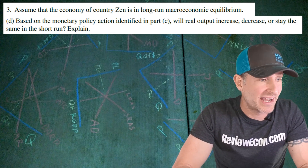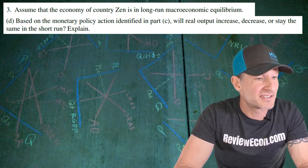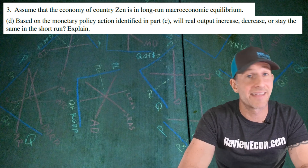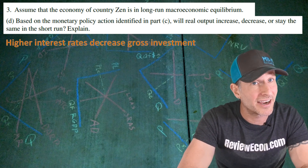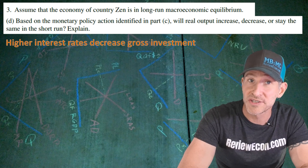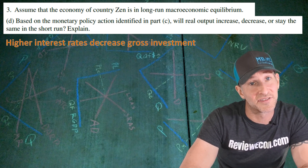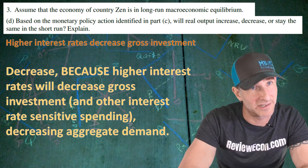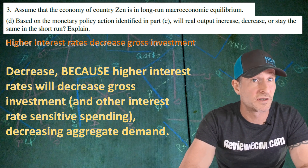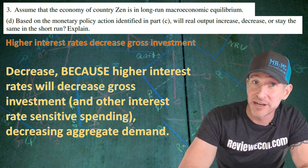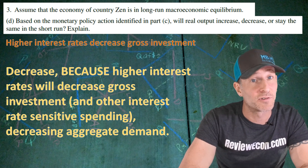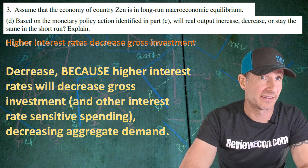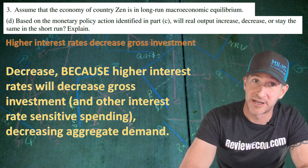Finally, based on the monetary policy action identified, we have to state what will happen to real output and explain. Higher interest rates will reduce gross investment, and that decrease in gross investment shifts the aggregate demand curve to the left, decreasing aggregate demand. Therefore, real output will decrease. Higher interest rates reduce gross investment and other interest-rate-sensitive spending, shifting aggregate demand left and decreasing real output. That explanation earns the last point.